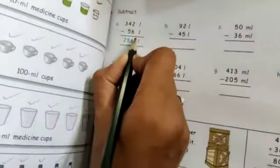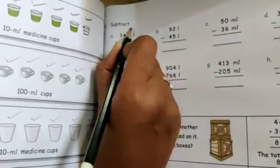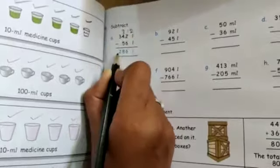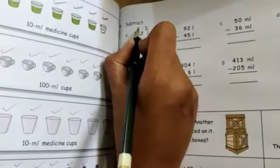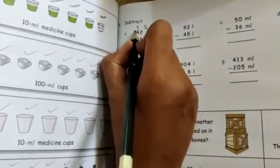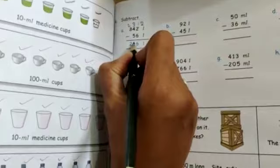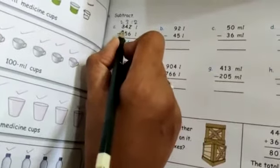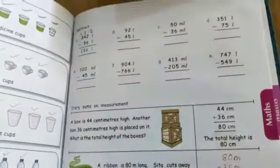2 minus 6, so you have to take a carry, it becomes 12, it becomes 3. 12 minus 6, 6. Here 3 minus 5, we can't, so it becomes 3, it becomes 2. 13 minus 5, 8. 2 minus nothing, so 2 as it is. Like that only you do subtraction.